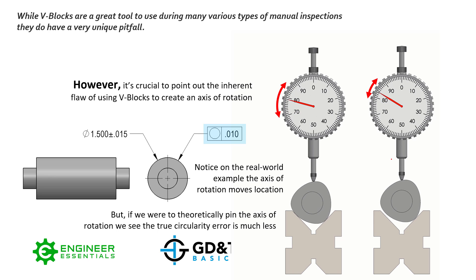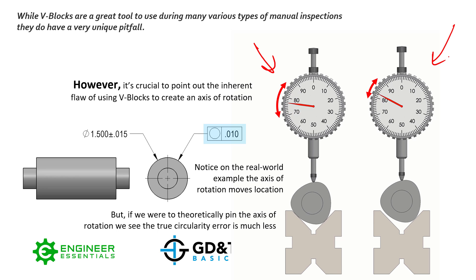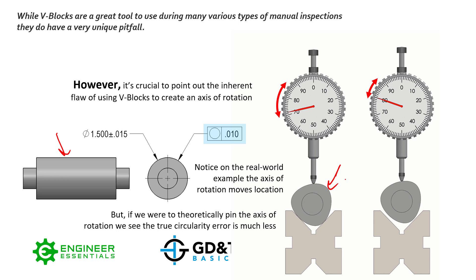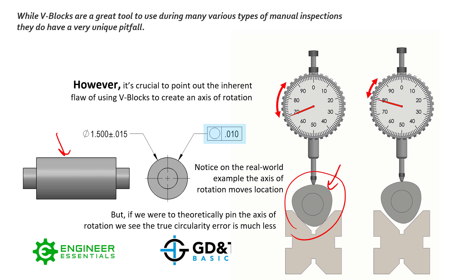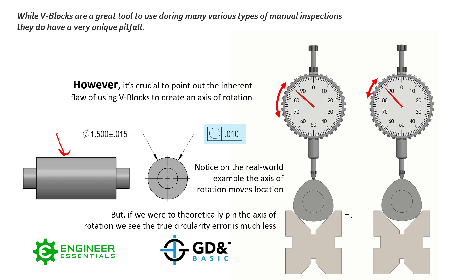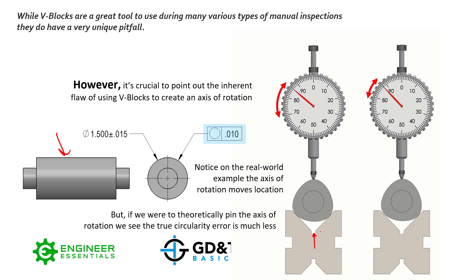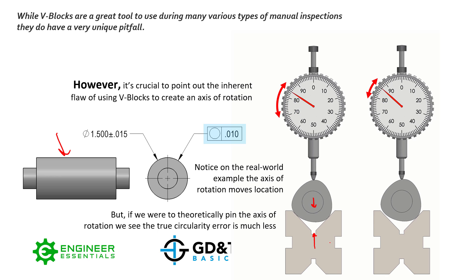Here we have two examples side by side. The left one is what happens in the real world, and the right one is what happens if you theoretically create a single fixed axis of rotation. If the high points of a trilobed cylinder — trilobing is a very real error that happens to many cylinders — settle down inside the v-block, the axis of the feature actually drops. The whole part kind of drops into the v-block.